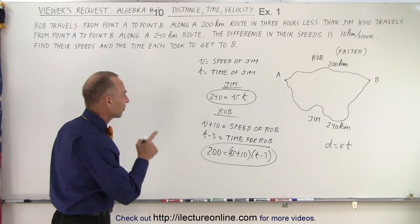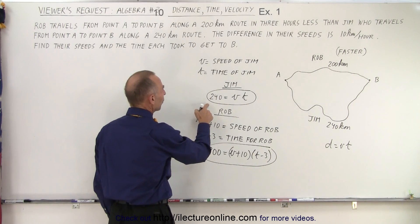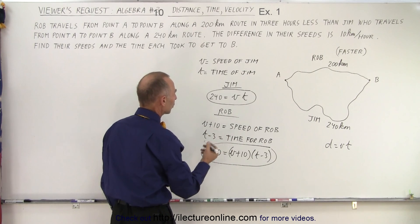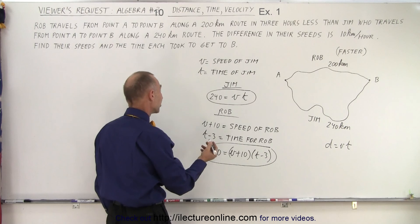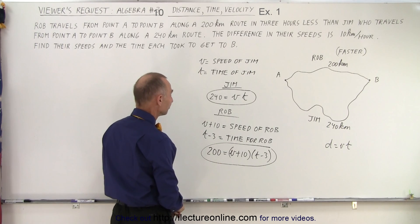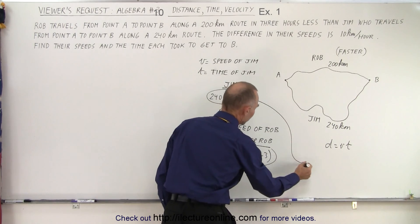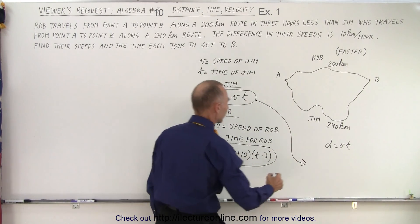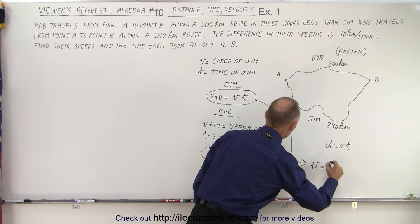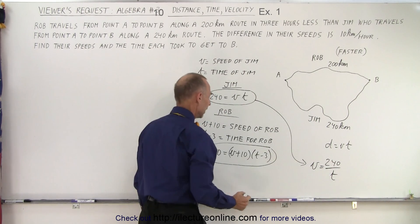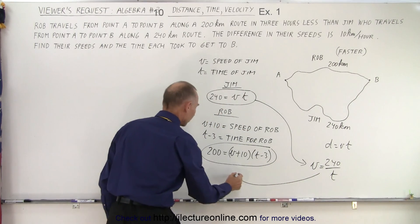So what we need to do now is take this equation and solve it for one of the two variables. T is 240 over V or V is 240 over T, doesn't matter either way. Well let's solve it for V. So I'm going to write that V is equal to 240 divided by T. And that then gets plugged into this equation right here.